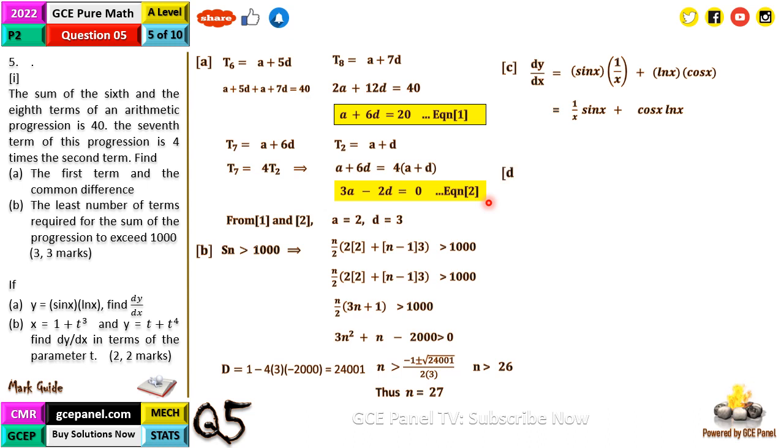That gives us 1 on x sine x plus cos x ln x. Now the next part, we have given the parametric equations x is equal to 1 plus t cubed and y equals t plus t to the power 4. Find dy/dx in terms of parameter t. With this question I will advise you to find dx/dt, dy/dt, and then you now express that. From here our dx/dt will be equal to 3t squared and dy/dt will be equal to 1 plus 4t cubed. So now we have dy/dx to be equal to dy/dt times dt on dx. So that just gives us 1 plus 4t cubed all that on 3t squared.